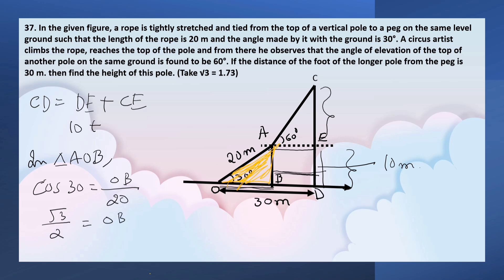Cos 30° is √3 by 2 equals OB by 20. This implies that OB equals 10√3 meters.